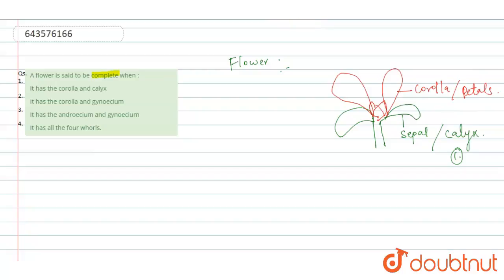Reproductive parts of flower is present. So male part of flower is stamen.